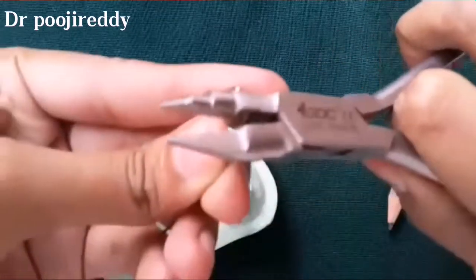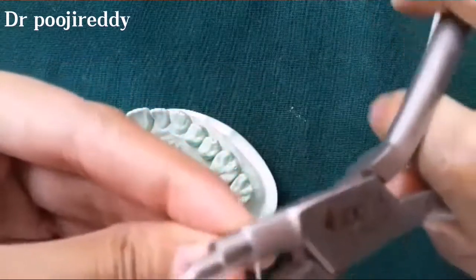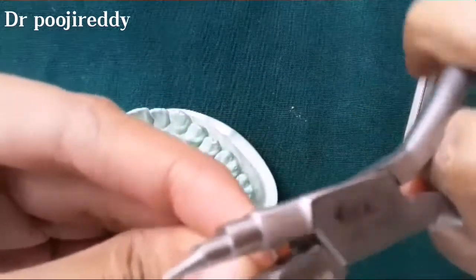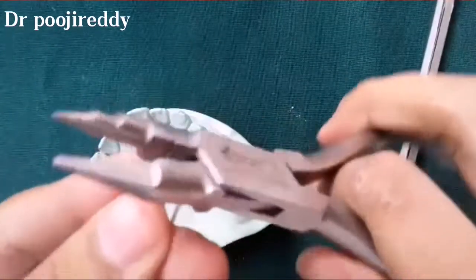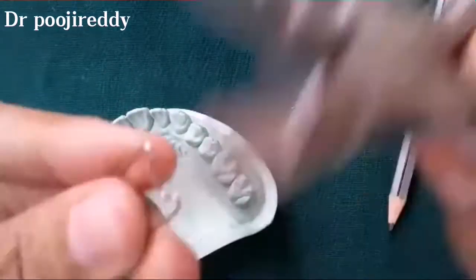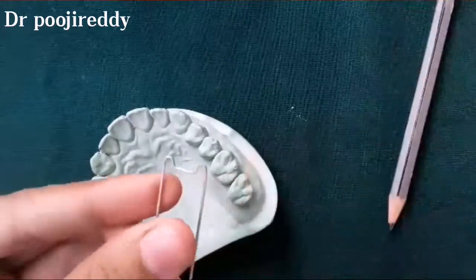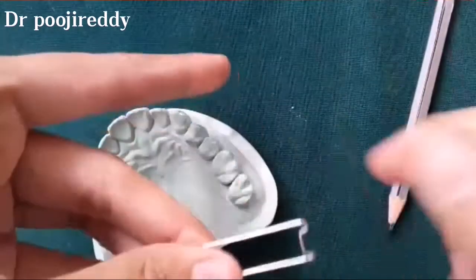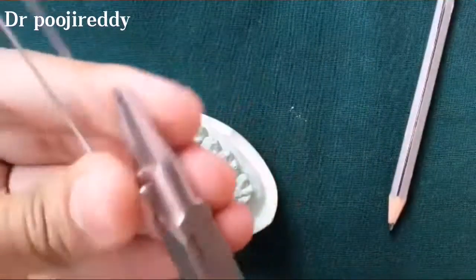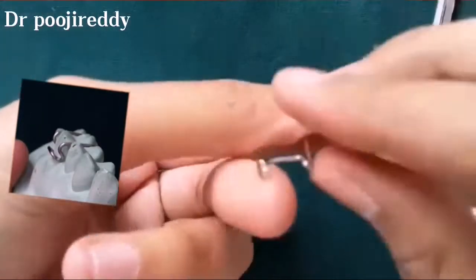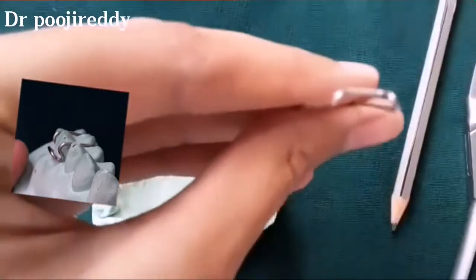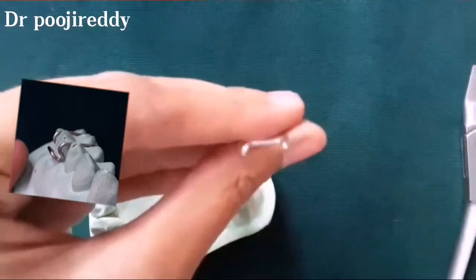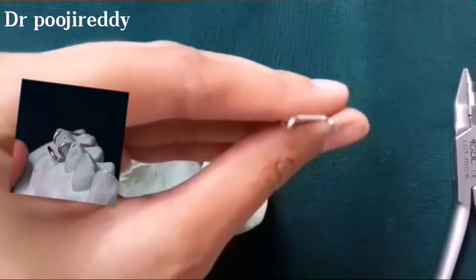Now close in the arrowheads so that the arrowhead will be as pointed as possible. Now the arrowhead is given a 45 degree twist so that the arrowhead will be 45 degrees to the bridge of the Adams clasp. It is clearly seen right now.